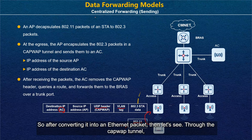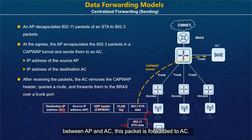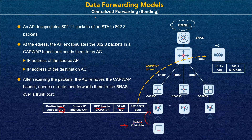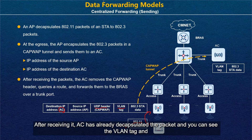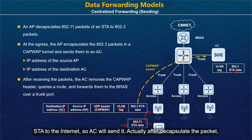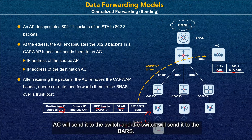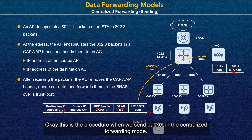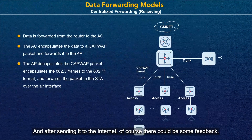Through the CAPWAP tunnel between AP and AC, this packet is forwarded to AC. After receiving it, AC decapsulates the packet — the VLAN tag and payload are left. Since the actual destination is the internet, AC sends the decapsulated packet to the switch, which forwards it to the router in 802.3 Ethernet format through the trunk port between AC and the switch.